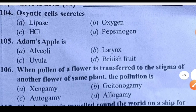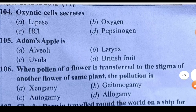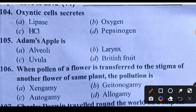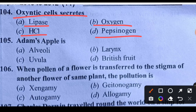Question 104: Oxyntic cells secrete what? Options: lipase, oxygen, HCl, or pepsinogen. Oxyntic cells secrete hydrochloric acid (HCl). Option C is correct.